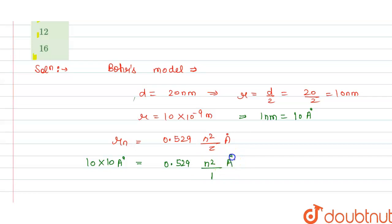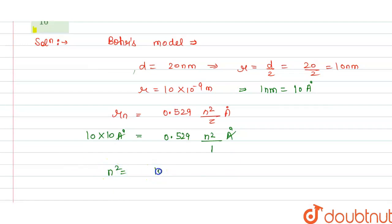And we have to calculate atomic number z is 1 angstrom. So this will cancel out. So we get n squared equals 100 divided by 0.529, so this will equal to 189.03.